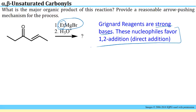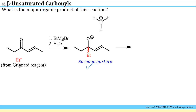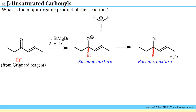1,2 addition is also known as direct addition. If we draw the ethyl anion that would result from dissociation of the ethyl group from the Grignard reagent, we can have simple direct addition to the ketone, as we've seen for many ketones throughout the semester. If an ethyl group attaches to this carbon, the carbon becomes a chiral center, and since we started with achiral starting materials, we would get a racemic mixture. The second step is aqueous acid, which serves to protonate the intermediary anion, giving a racemic mixture of the alcohol product.